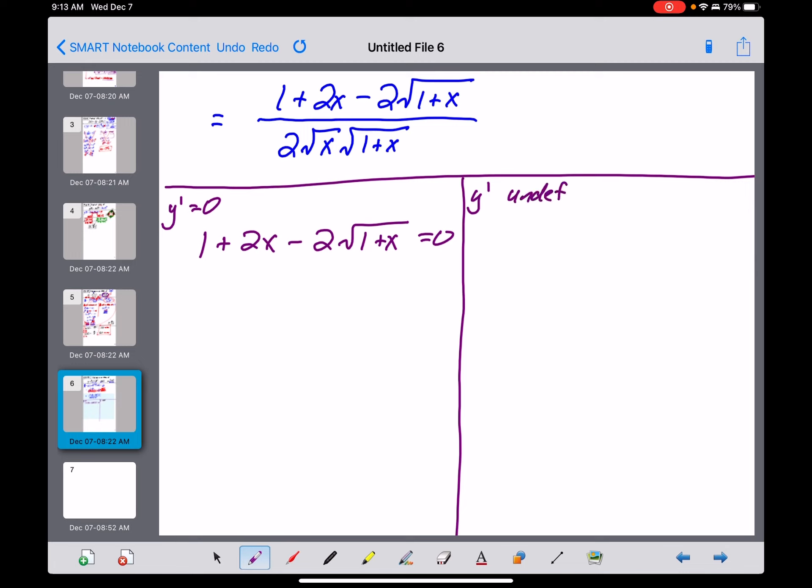The derivative being undefined, that happens when your denominator, two root x times the square root of one plus x, when that denominator is equal to zero. That would make the derivative undefined. So, what am I going to focus on here first? That thing I've got on the left over here looks like a monstrosity, and I'm kind of thinking, to be realistic with you guys, we would probably use our calculator to solve that. I think it could be done by hand, but it would give us a quadratic and be kind of a pain, and I think we're not going to take the time to do it that way.